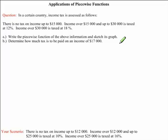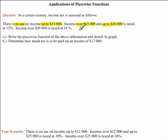Secondly, we need to determine how much tax is to be paid on an income of $17,000. Before we begin answering this question, let's highlight the key points. Income over $15,000 and up to $30,000 is taxed at 12%. Income that is over $30,000 is taxed at 18%. We're going to use this information to write our piecewise function.